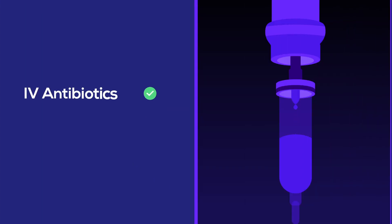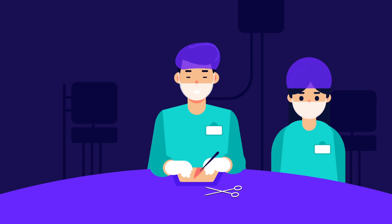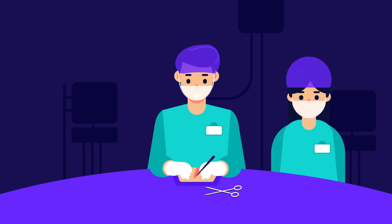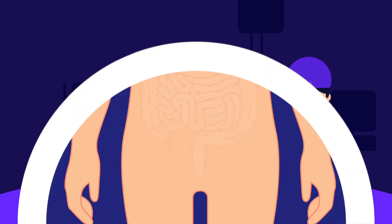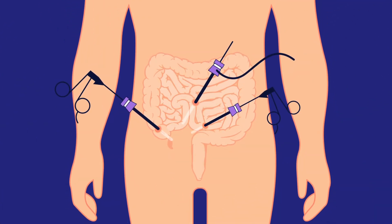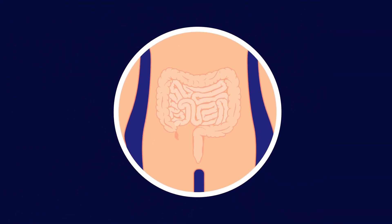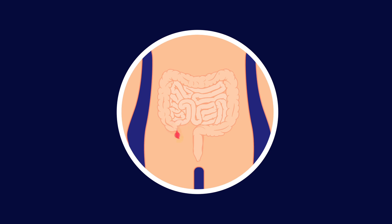We started him on IV antibiotics and IV fluids and planned for an urgent appendectomy. Appendectomy is the surgical removal of the appendix and is widely accepted as a safe and successful therapy for acute appendicitis. It can be done via laparoscopy or as open surgery — the laparoscopic approach is the gold standard. During the surgery, we detected the ruptured appendix, and since there was pus around it, irrigation and drainage of the peritoneum were also carried out.